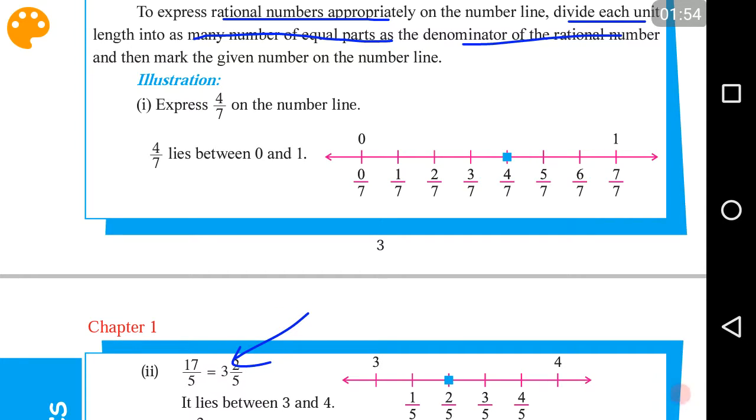So for 3 and 2 by 5, we have to divide between 3 and 4 into 5 equal parts. So you can see, this is 1 by 5, this is 2 by 5, 3 by 5, 4 by 5, 5, this is 5 by 5 which will be 4 again then.